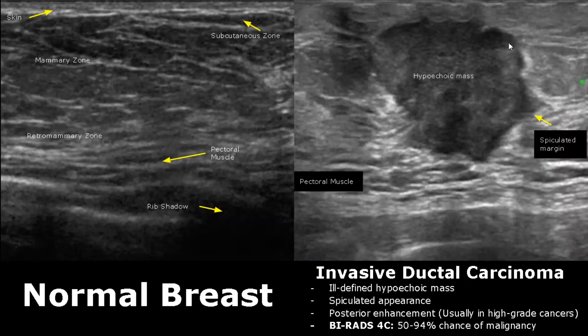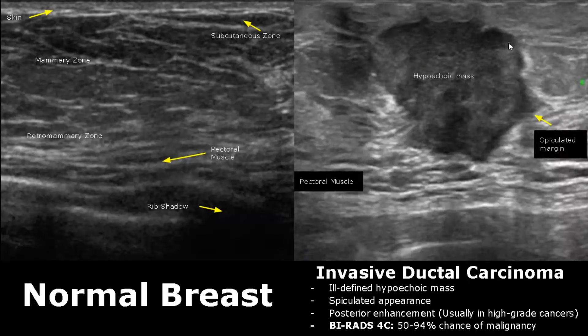Here we have invasive ductal carcinoma with posterior acoustic enhancement. This enhancement is usually a sign of a higher-grade cancer. It also has a spiculated appearance suggesting a malignant lesion. It is rated as BI-RADS 4C.